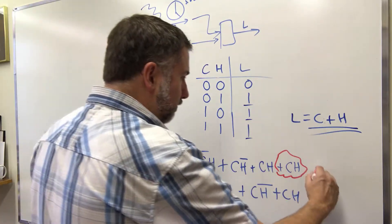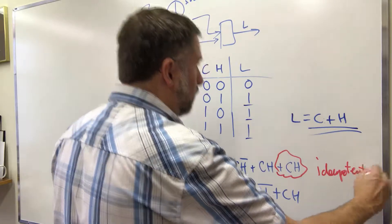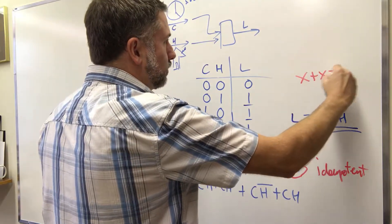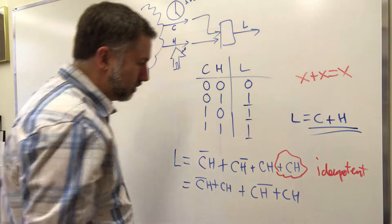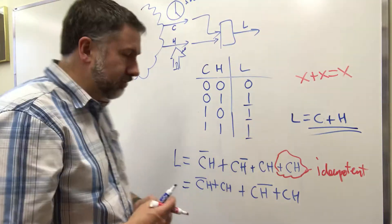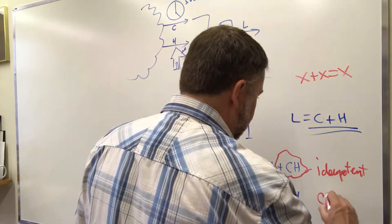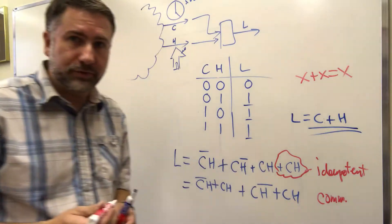It means X or X equals X, and it allows us to duplicate terms. Then we're rearranging. What's the rule that we can use to rearrange things? That is commutative.